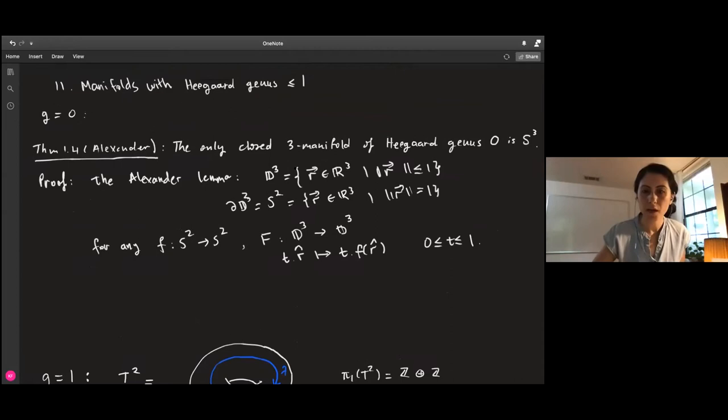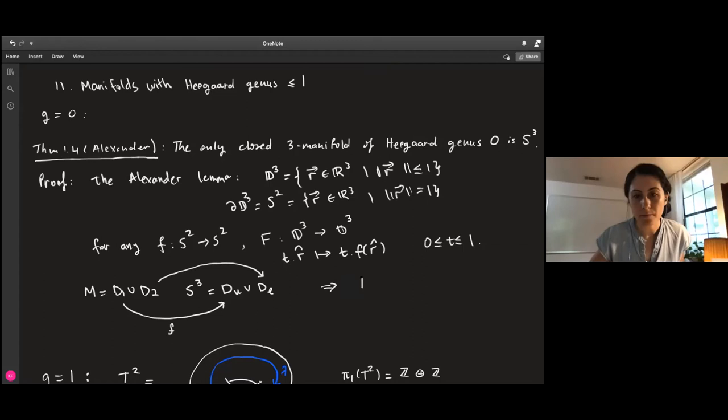In light of that, if M is a manifold obtained by gluing two discs, and we know S³ also admits a description as two discs glued together - the upper and lower hemispheres - we can find a homeomorphism from the first disc to the upper hemisphere of S³. Since they share a common boundary, F can extend to the second disc, which implies M is homeomorphic to S³.